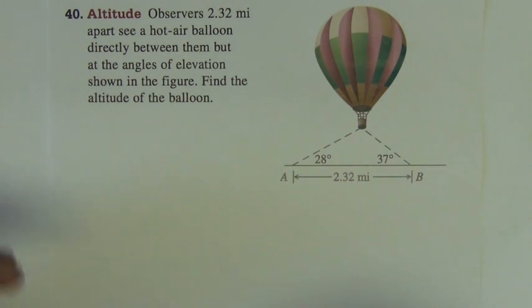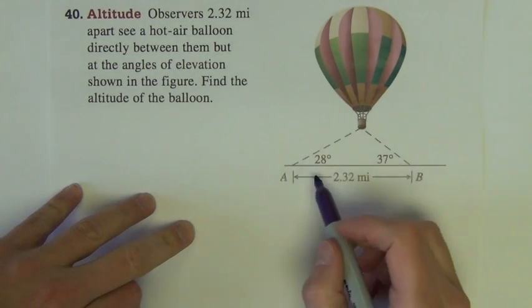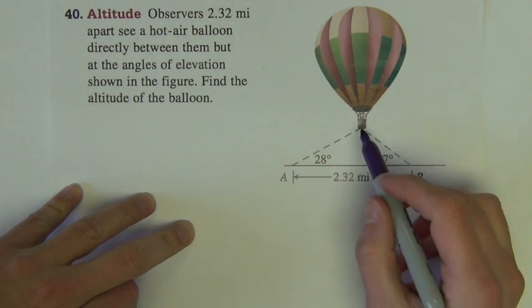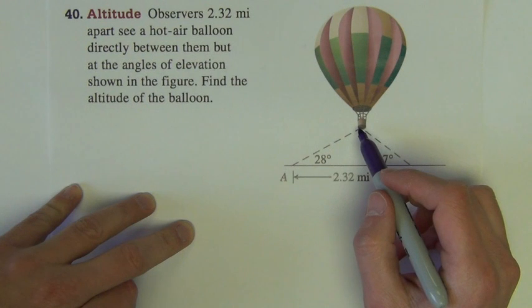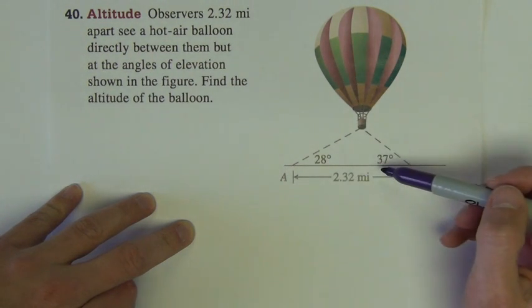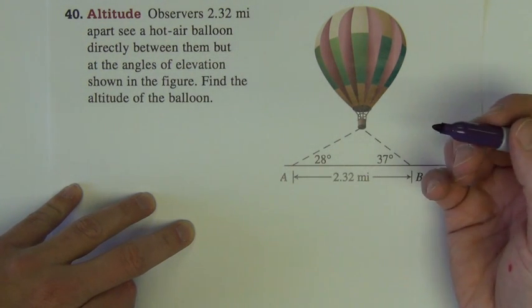If you think you've got the hang of this, just work through it on your own real quick and kind of skip ahead, fast forward the videos, get to the answers, check and make sure you're doing just fine. So, here it says two observers, 2.32 miles apart, see a hot air balloon directly between them, but at the angles of elevation shown in the figure, find the altitude of the balloon.